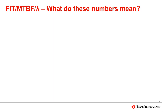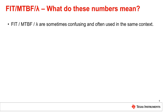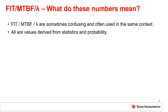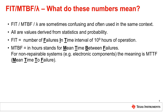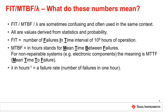FIT, MTBF, and Lambda are sometimes confusing and often used in the same context, but all are values derived from statistics and probability. FIT is the number of failures in a time interval of 10 to the 9th hours of operation — that is, the FIT number is the number of failures in 1 billion hours of operation. MTBF is also given in hours and stands for mean time between failures; for non-repairable systems such as electronic components, the meaning is MTTF, which is mean time to failure. Finally, Lambda is given in hours to the minus first — it is a failure rate, which is the number of failures in one hour.